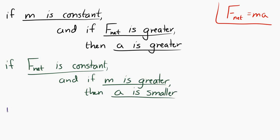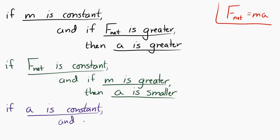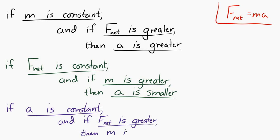Also, if the acceleration is kept the same — so if we have two objects with the same acceleration — but if one object is receiving a greater net force to get that same acceleration, that means that object must have greater mass. So there are a number of ways that we can interpret this.